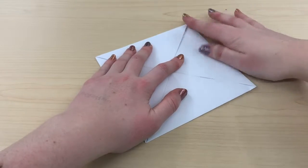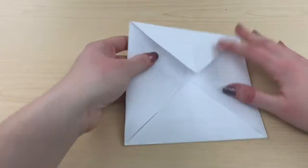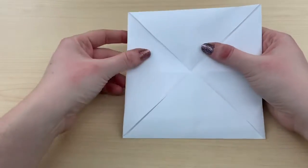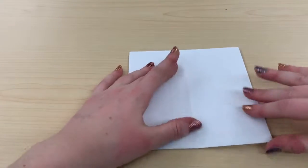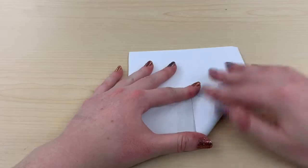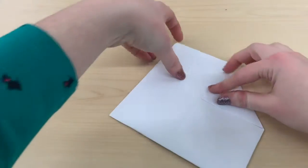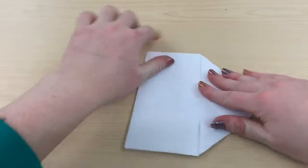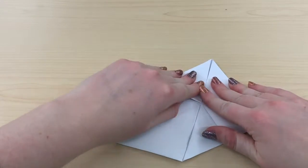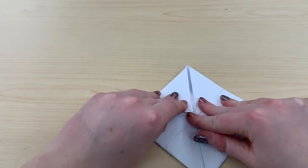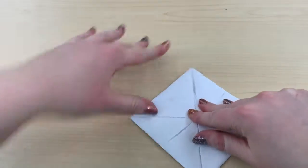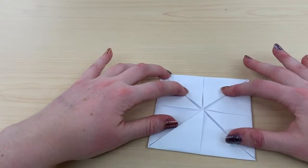Once you have another square with four corners pointing into the center, you're going to flip that upside down and do the exact same thing again. So again, you just want to fold in each of the four corners into the center. And you want these to be nice, smooth, crisp folds.